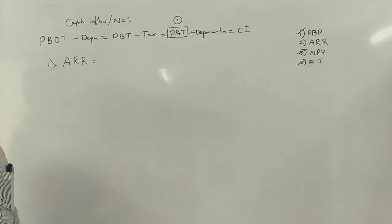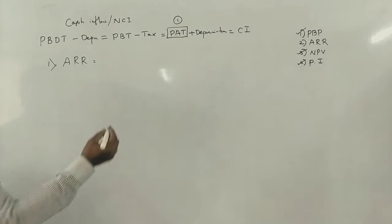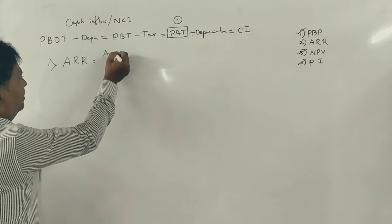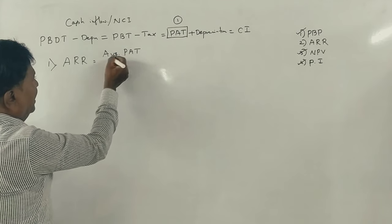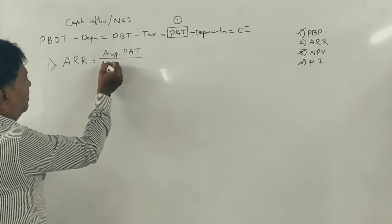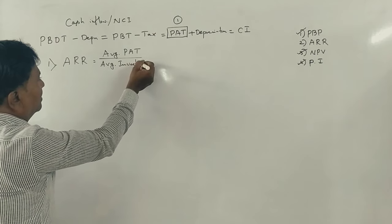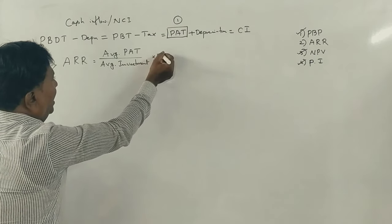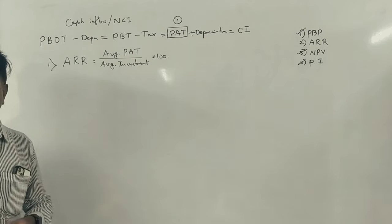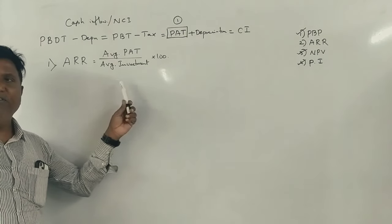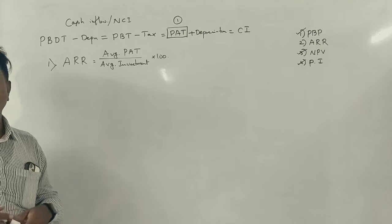ARR — Average Rate of Return — formula: average profit after tax divided by average investment, multiplied by 100. How to calculate average profit after tax? Let me show one example.